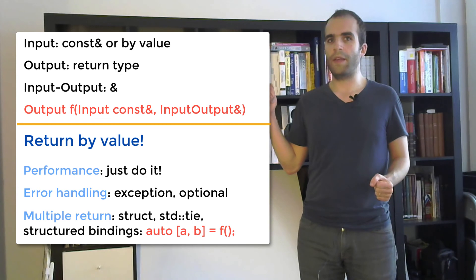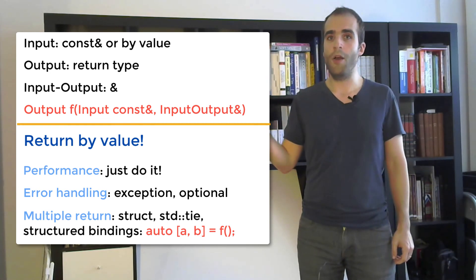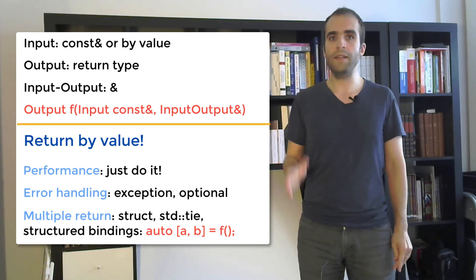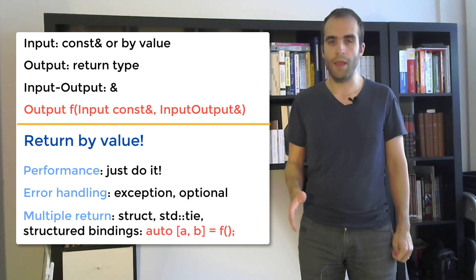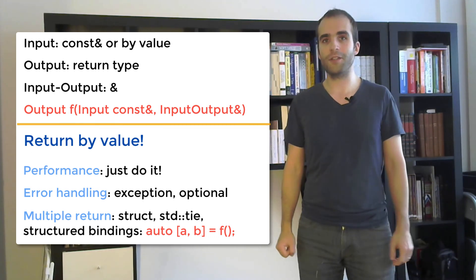So whether in the case of performance or error handling or several things coming out of a function there are ways to return by value. So let's return by value and make our functions functional.